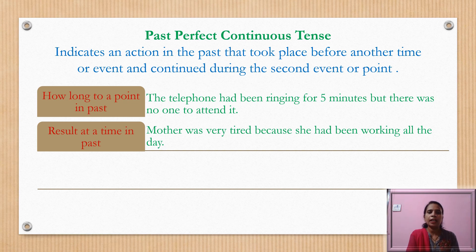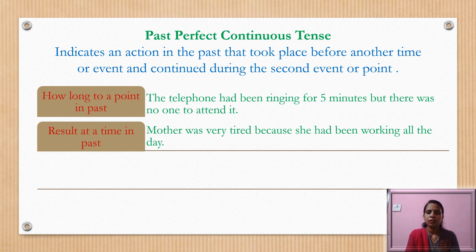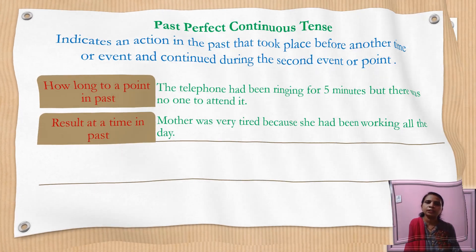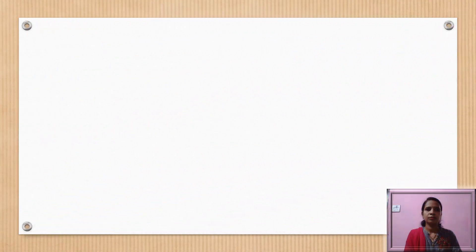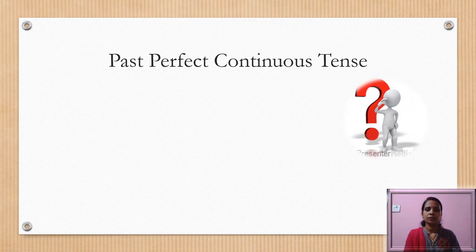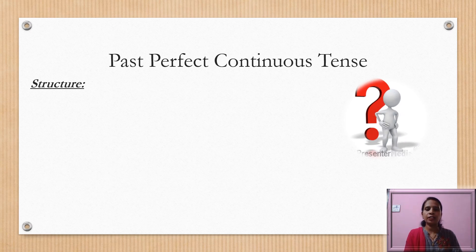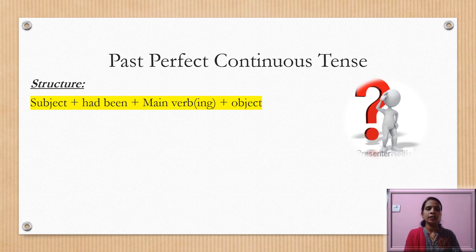Some results at a time in the past are also expressed in this tense. For example, 'Mother was very tired because she had been working all day.' Now, the structure: subject, then the helping verb 'had been,' then the main verb with '-ing,' and then the object.